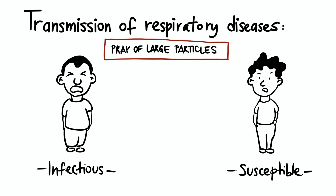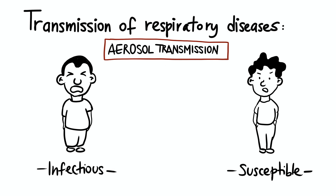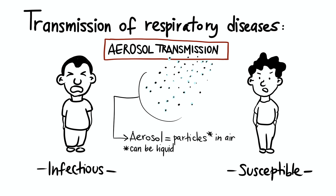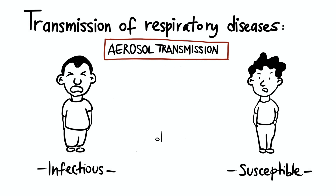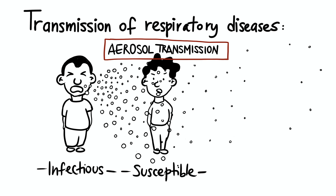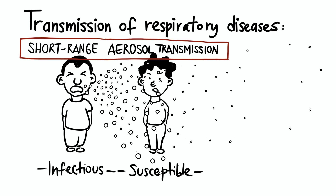The third way you can get infected is by inhaling virus-containing particles that are floating in the air. This transmission route is called airborne or aerosol transmission. Some people think of an aerosol spray can of deodorant when they hear the word aerosol, but really an aerosol is just a bunch of particles suspended in the air. Getting infected this way could happen either close up to a person, called short-range aerosol transmission, or when you're far away, called long-range aerosol transmission.